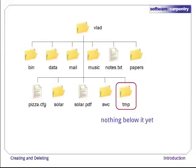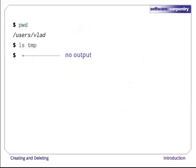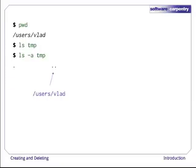We're in /users/vlad and temp is empty, which we can tell because ls doesn't print any output. If we use ls -a to show directories whose names begin with dot, we see that dot and dot dot are there, as they always are. The first name, dot, refers to the directory itself, i.e., /users/vlad/temp. The second, dot dot, refers to its parent, which is the current working directory /users/vlad.